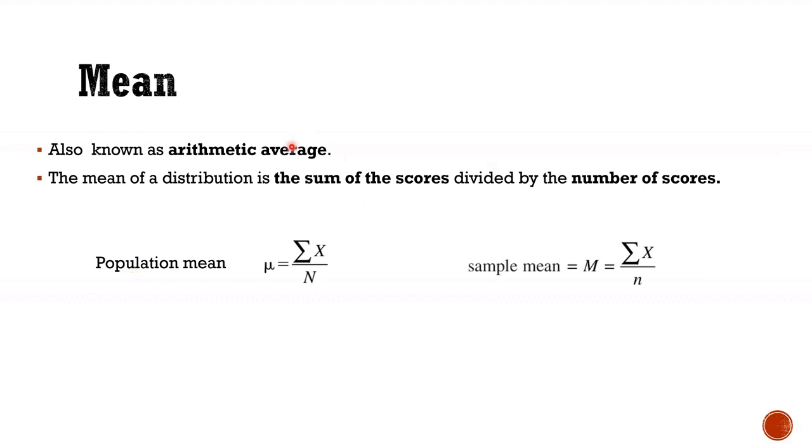So let's see what are the central tendencies. Basically there are three: mean, median and mode. First we will talk about the mean. It is also known as arithmetic average and mean is defined as the sum of the scores divided by the number of the scores.